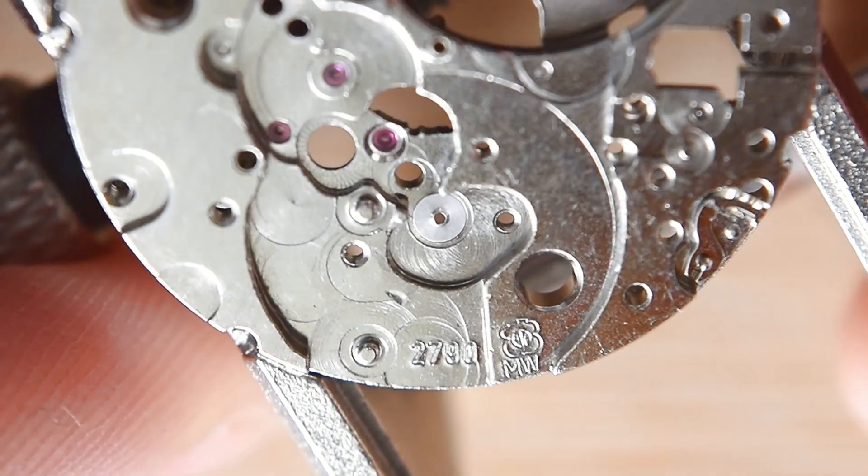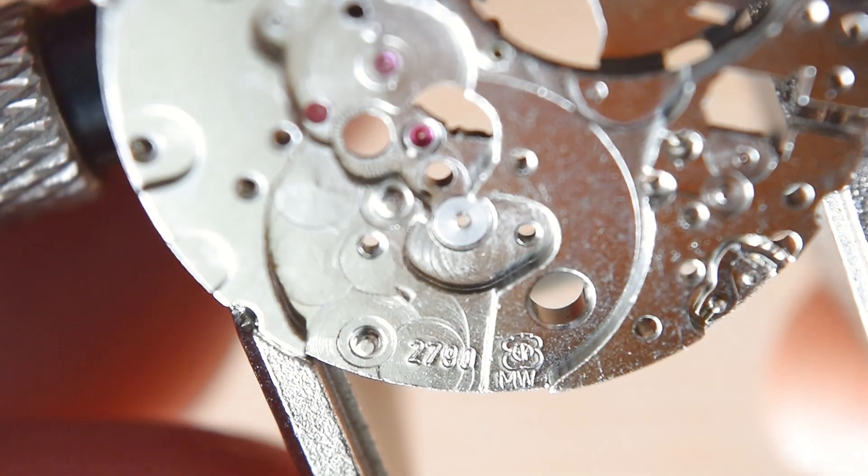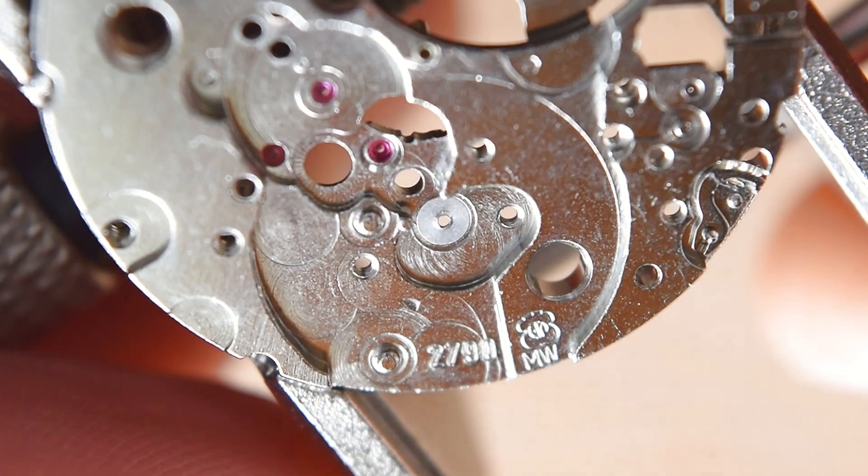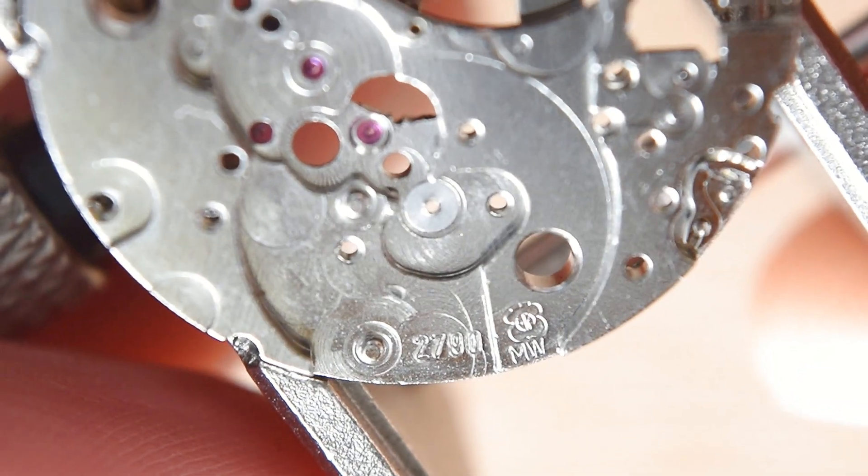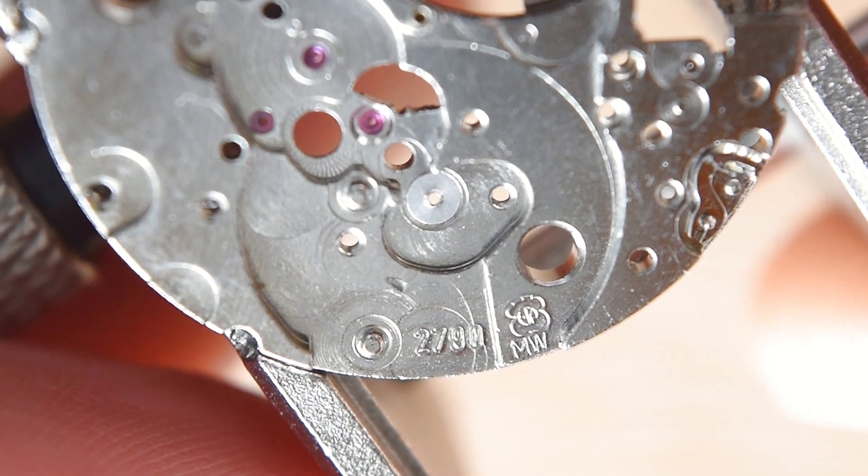As we can see here, this is an ETA 2790, a Swiss-made movement. In this video I show you assembly of this Swiss-made ETA 2790. Let's begin!